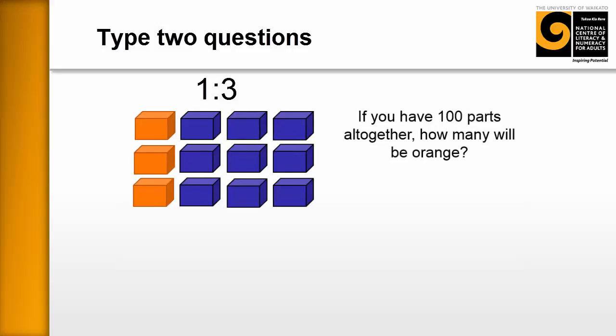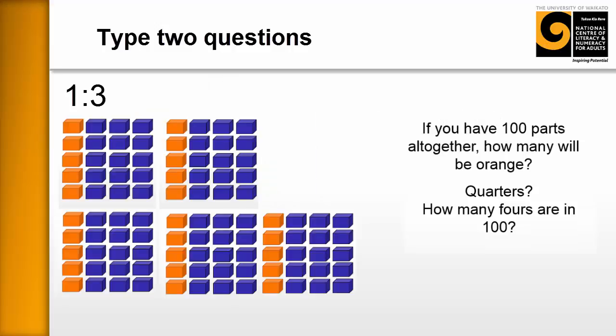So here's our generalizing question. If you have 100 parts all together, how many will be orange? This is going to really challenge the learners. They're going to have to look at those relationships and think we know that perhaps one quarter of them would be orange or not. We're not sure, you know, but one fourth, maybe they're thinking one fourth.